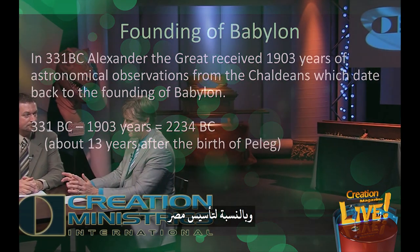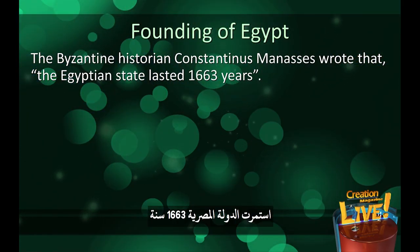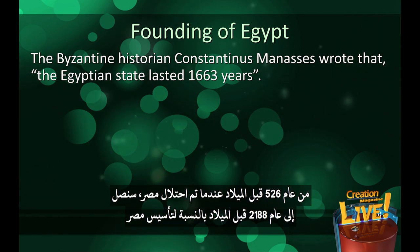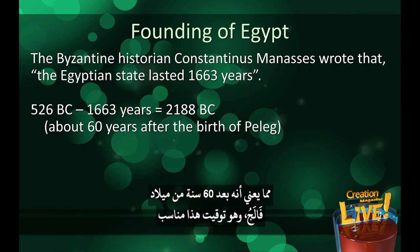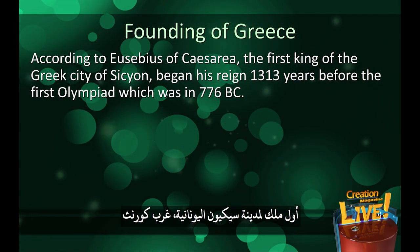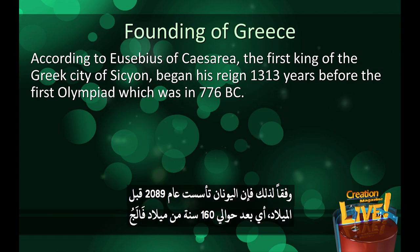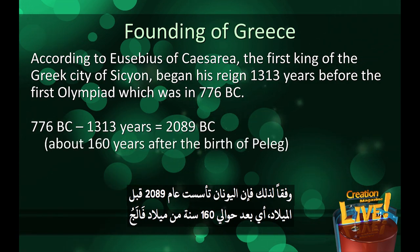Regarding the founding of Egypt: the Byzantine historian Constantinus Manasses, who died in AD 1187, wrote that the Egyptian state lasted 1663 years. Counting backwards from 526 BC when Egypt was conquered gives a founding year of 2188 BC — about 60 years after the birth of Peleg. That's a good fit. According to 4th-century bishop and historian Eusebius of Caesarea, the first king of the Greek city of Sicyon began his reign 1,313 years before the first Olympiad in 776 BC — placing the founding of Greece at 2089 BC, about 160 years after the birth of Peleg. Again, a beautiful fit.